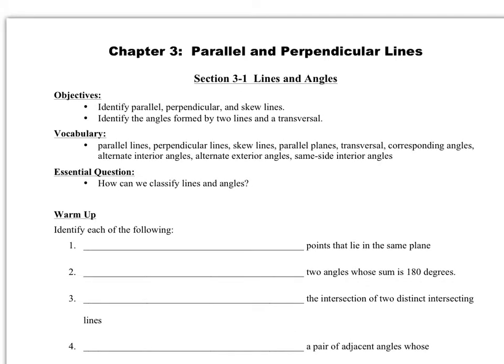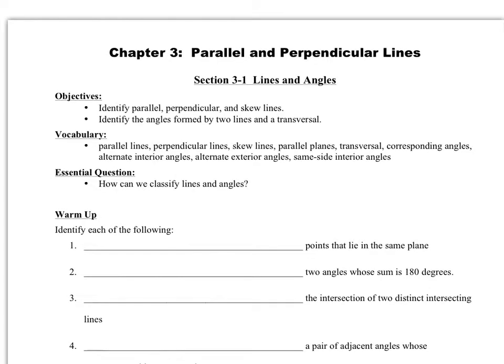We are going to start by looking at our objectives. The first one is to identify parallel, perpendicular, and skew lines. The second one is to identify the angles formed by two lines and a transversal. We are seeing some new vocabulary this time, and some of it is familiar: parallel lines, perpendicular lines, skew lines, parallel planes, transversal, corresponding angles, alternate interior angles, alternate exterior angles, and same side interior angles.